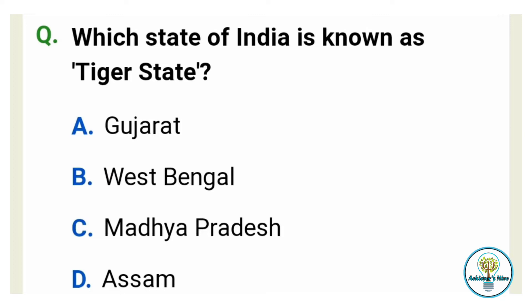Which state of India is known as Tiger State? Option A: Gujarat. Option B: West Bengal. Option C: Madhya Pradesh. And option D: Assam. And the correct answer is option C, Madhya Pradesh.